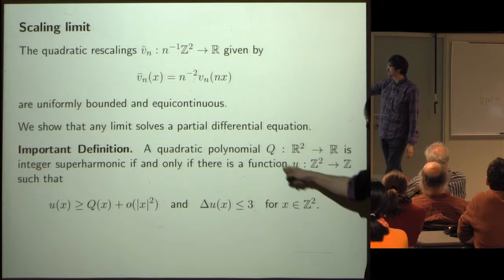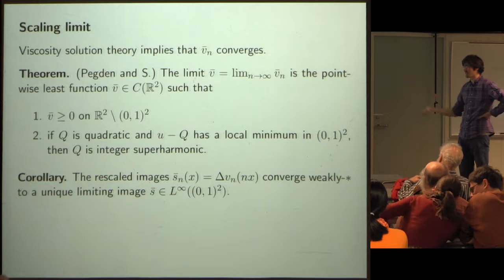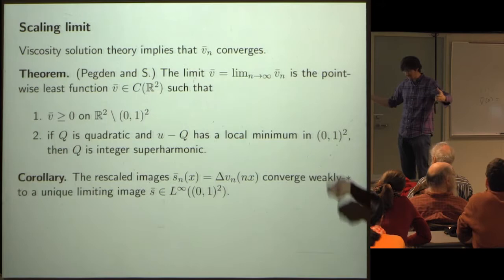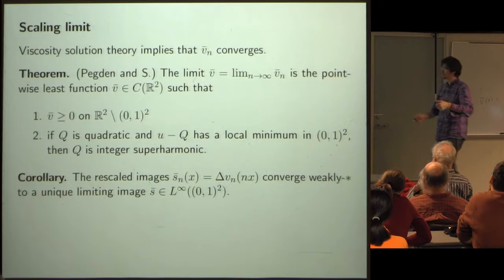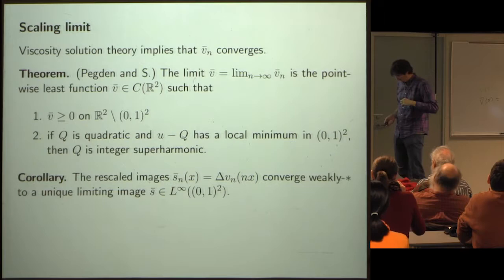Step two is making the integer superharmonic definition. Step three is that the PDE machinery tells you that if you understand this set of quadratic polynomials, you've captured the limit. The first theorem we proved is that this image does stabilize as n goes to infinity — this had been open for about 20 years, and it turns out to be fairly straightforward if you understand viscosity solution theory.